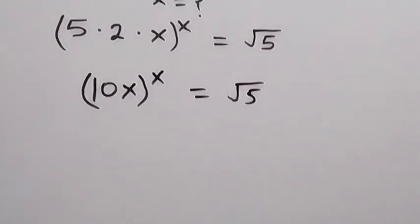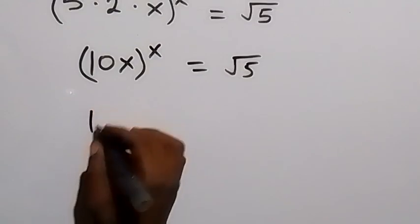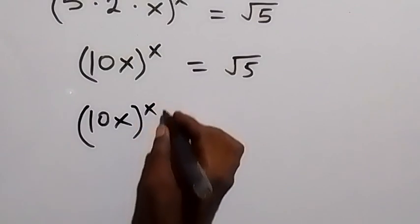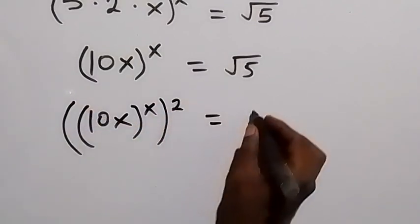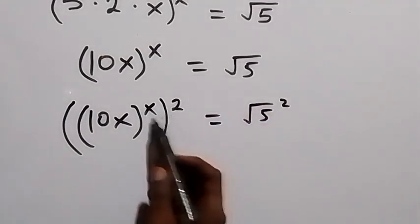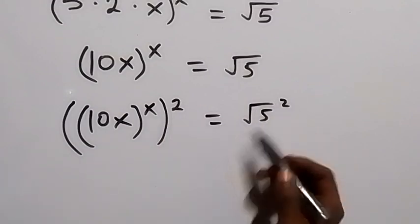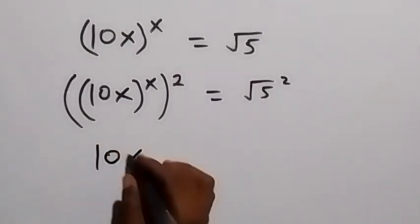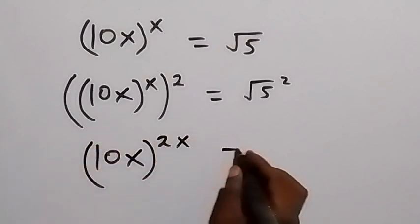In the next step, let's square both sides. When we square both sides, this becomes 10x raised to power x, then squared, equals root 5 squared. The square and square root cancel, leaving 5. So we have 10x raised to power 2x equals 5.